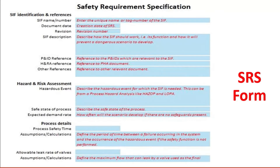The allowable leakage rate of valves — the final control elements — also needs to be specified. Valves can allow only a certain amount of liquid or gas as per the seat leakage class conditions. Any assumptions and calculations defining the maximum flow that can leak through a valve used as a final element must be mentioned. These are all part of the SRS form, which is an Excel sheet type of template, and includes multiple sections covering design specification, type of sensors, leakage rate, and so on.